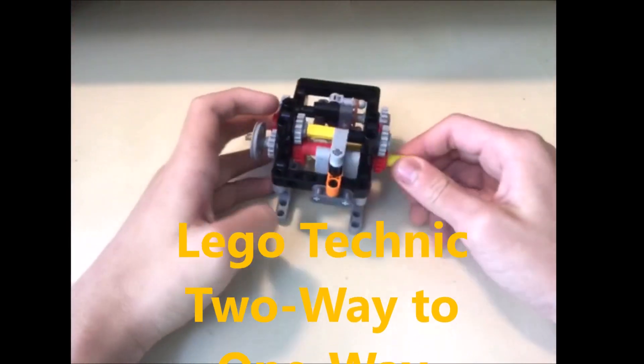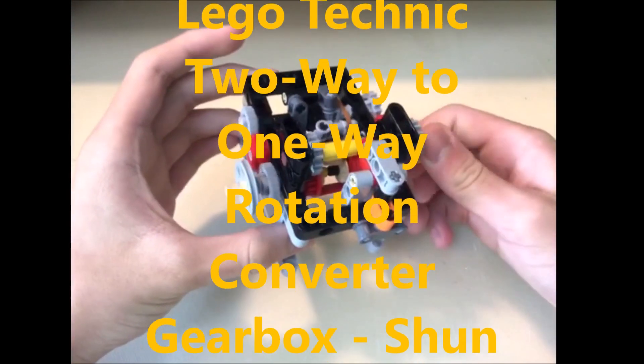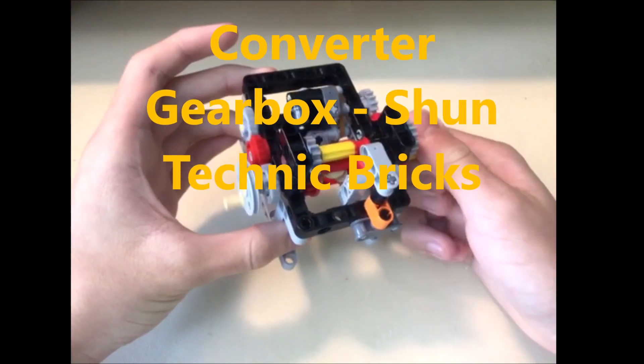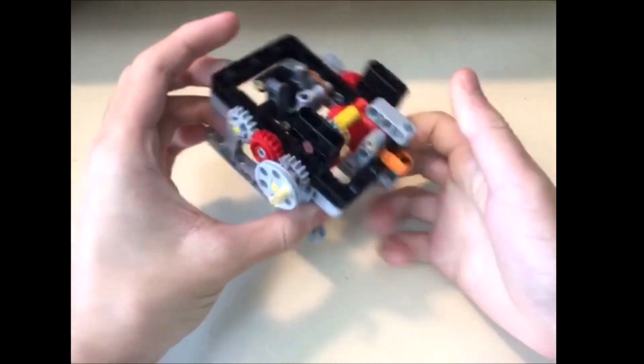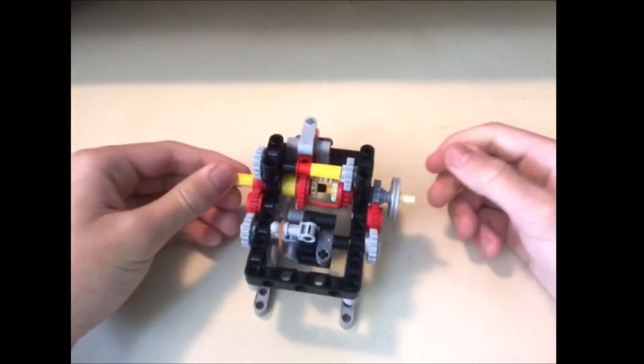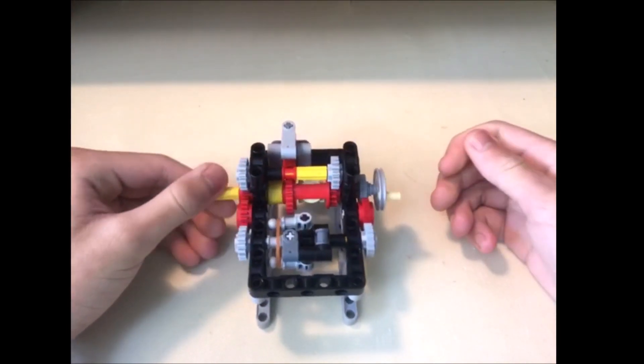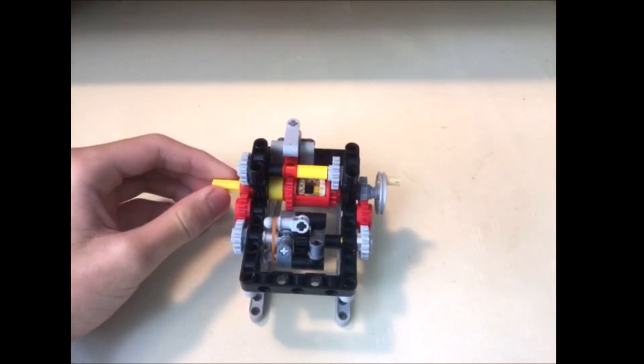This is the LEGO Technic 2-Way to 1-Way Rotation Converter Gearbox. So basically what it does is it transfers a 2-Way rotating movement to a single-way rotation.